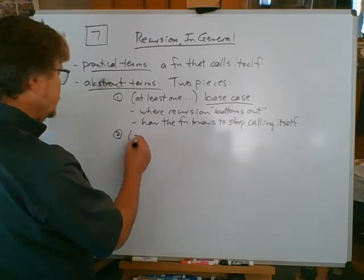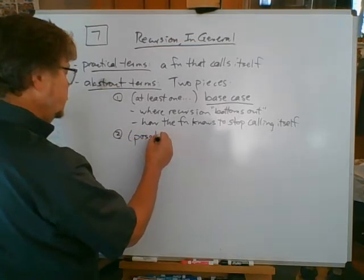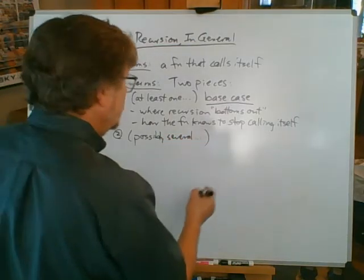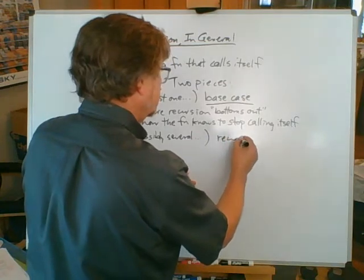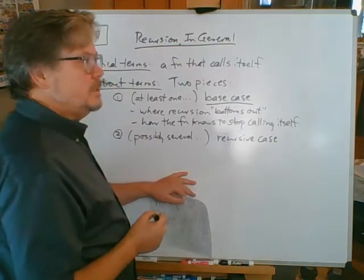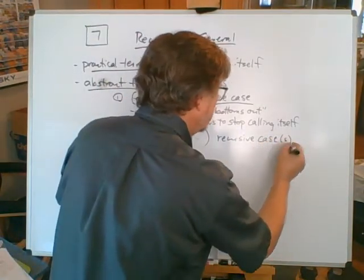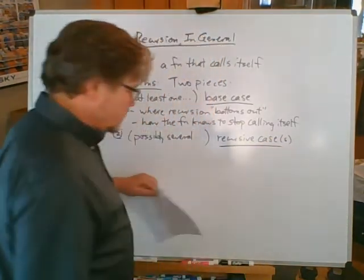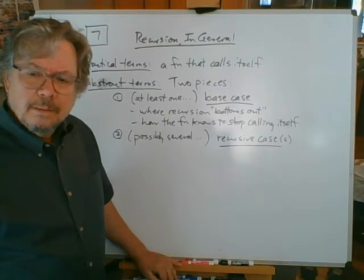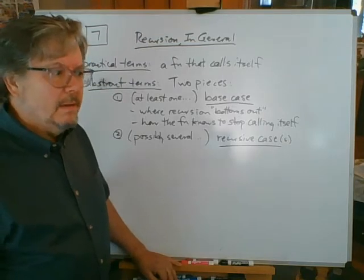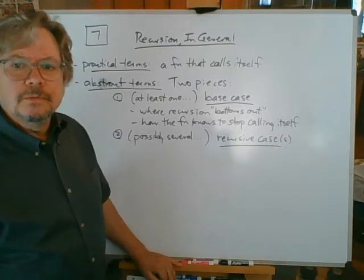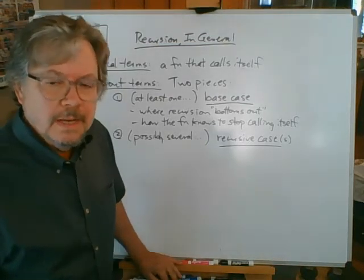Big piece number two: possibly several recursive cases. In some of these, just one recursive case, but maybe there are several. Lab 1 — the lab1.cpp program — that recursive function calls itself from more than one place. Each one of those would be considered a recursive case where it keeps calling itself. We could also have multiple base cases, grouping all those together as things that could stop us from calling ourselves.